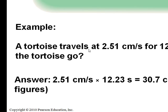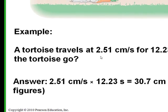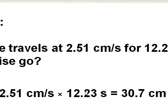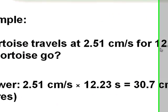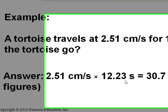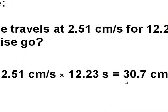Here's another example. A tortoise travels at 2.51 centimeters per second for 12.23 seconds. How far does it go? So to get this, I'm going to use some dimensional analysis. I want to figure out how far, so I want centimeters. So I'm going to have to multiply these numbers to cancel out the seconds to get centimeters. When I multiply these, I'm going to use my rule to count sig figs. This has three sig figs. This has four. I go with the least number, so my answer needs to have three sig figs.